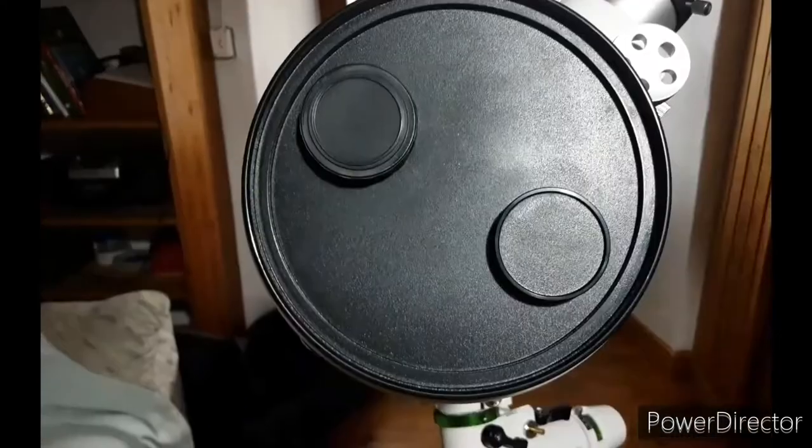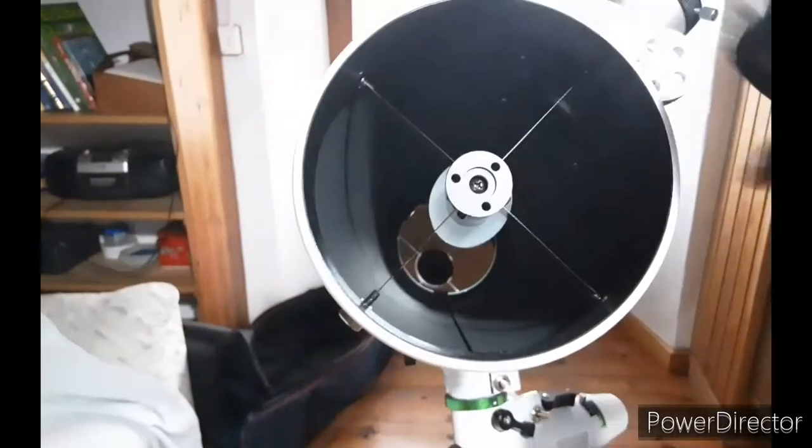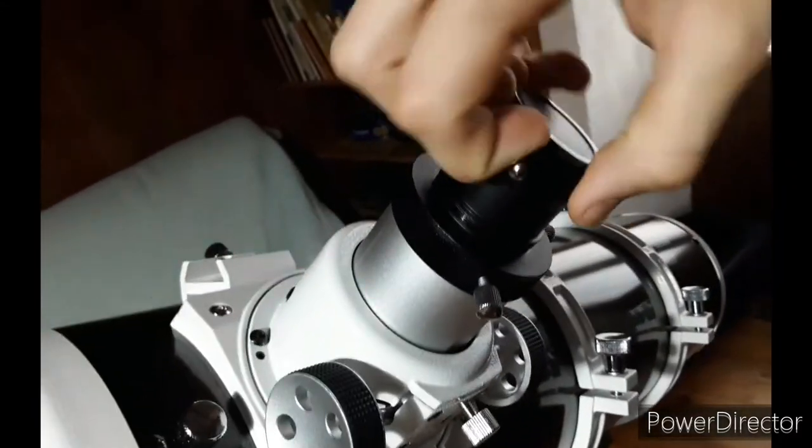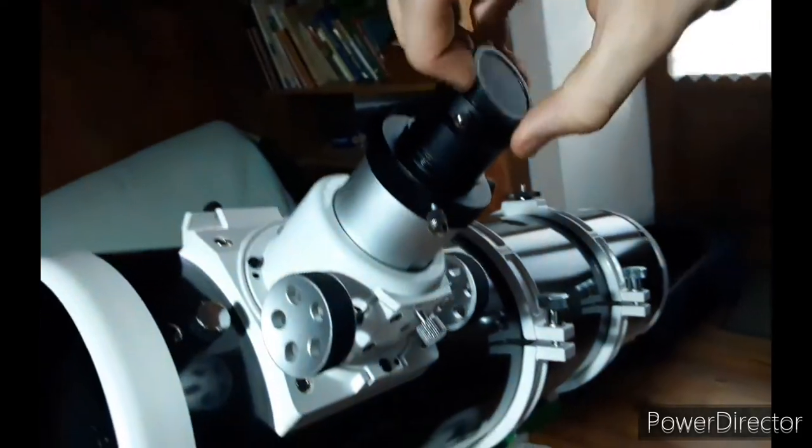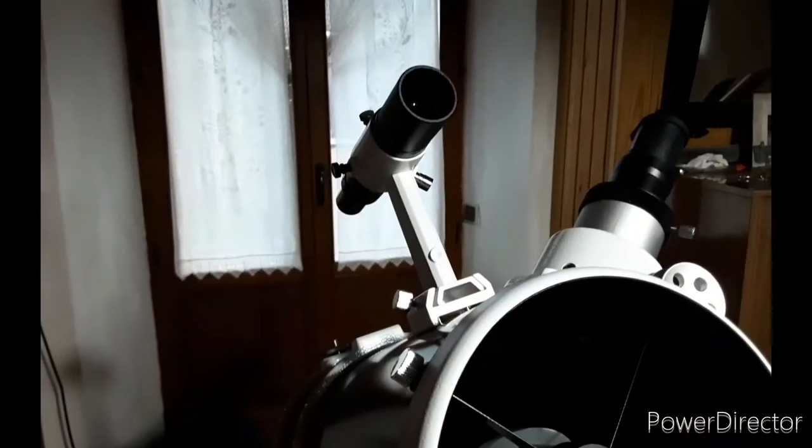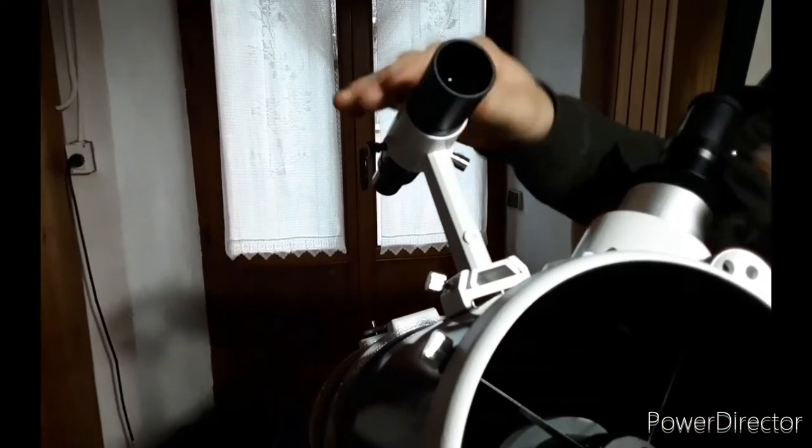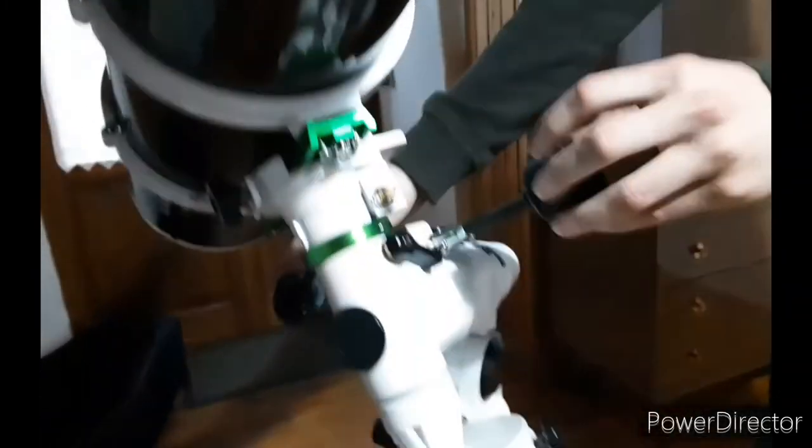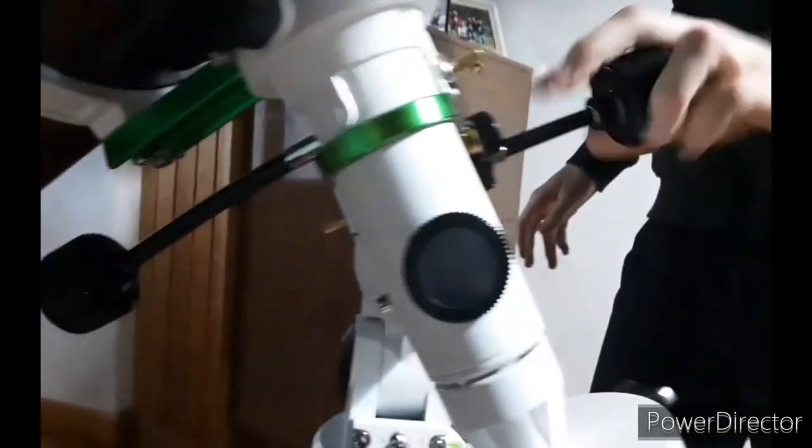And now we are taking off all the covers, like the big tube cover and the ocular one, and we're going to put the finder scope like this one to calibrate the telescope. And here we have put all the extra pieces: the finder scope, the 25mm eyepiece, and these two pieces to follow the rotation of the Earth.